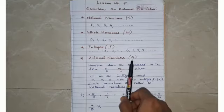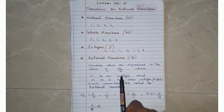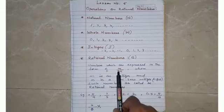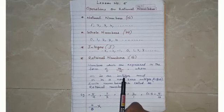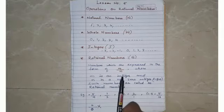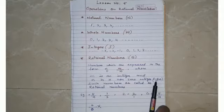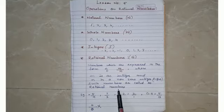Rational numbers are represented as capital Q. They are numbers expressed in the form m upon n — that is, in fraction form — where m is an integer (in the numerator) and n is a non-zero integer (in the denominator). The denominator n can be negative or positive but cannot be equal to zero.